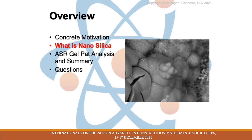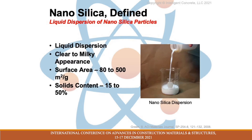So then what is the solution? This nanosilica is a liquid dispersion, often seen as clear to milky. Depending on the type and solids concentration, you're looking at a surface area anywhere between 80 to 500 meters squared per gram, and a solids content of 15 to 50 percent. As seen in the picture, it has that clear to milky appearance.